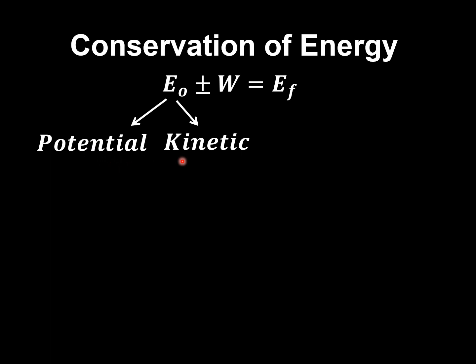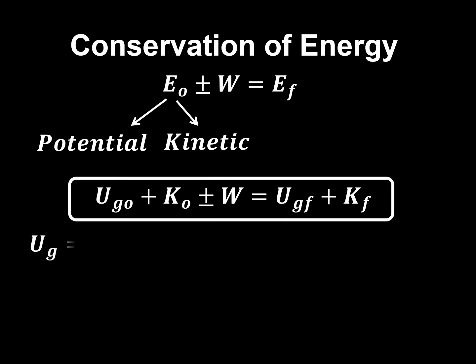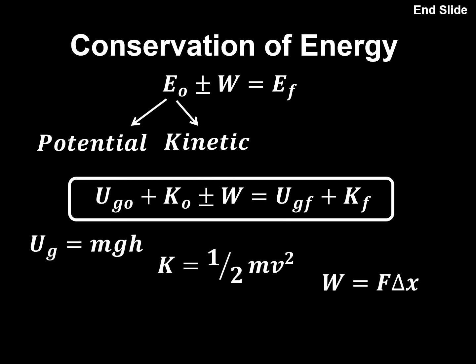Energy is either going to be potential or kinetic — potential meaning spring potential or gravitational potential — plus kinetic energy. The full conservation of energy equation includes all potential energy, kinetic energy, and any work done, equal to my final gravitational potential energy and final kinetic energy. If no work is done, the total energy I start with equals the total energy I end with.